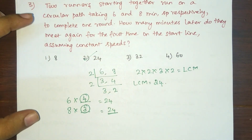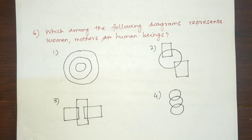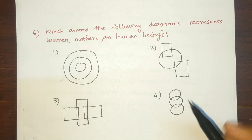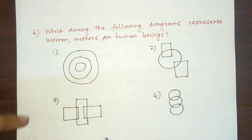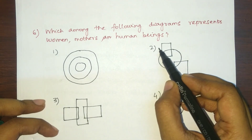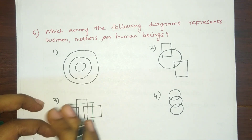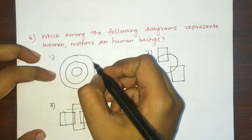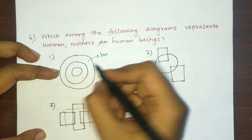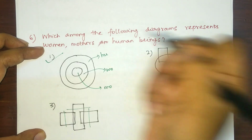Next question: which among the following diagrams represents women, mothers, and human beings? Looking at the second, third, and fourth diagrams, you can see there are leftover parts not included in the other two diagrams. You have to understand that women and mothers come under human beings. So the largest circle represents human beings, one inner circle represents women, and another represents mothers. Option one is the right answer.